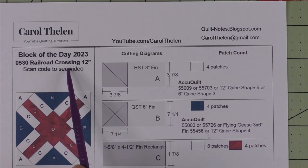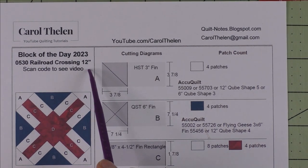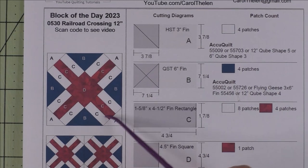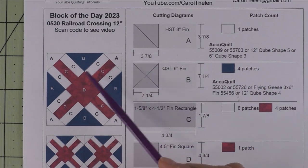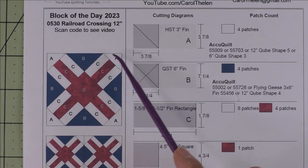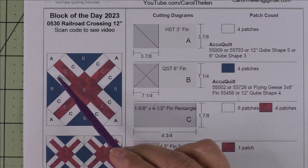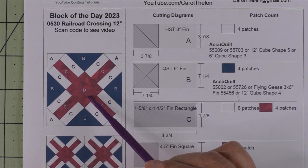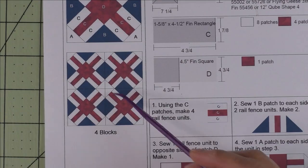This block is Railroad Crossing and it's 12 inches finished. Here is the diagram. It's very easy—there are some large half square triangles or quarter square triangles, some rectangles, and a big square in the center. Here is what it looks like set block to block in four blocks.